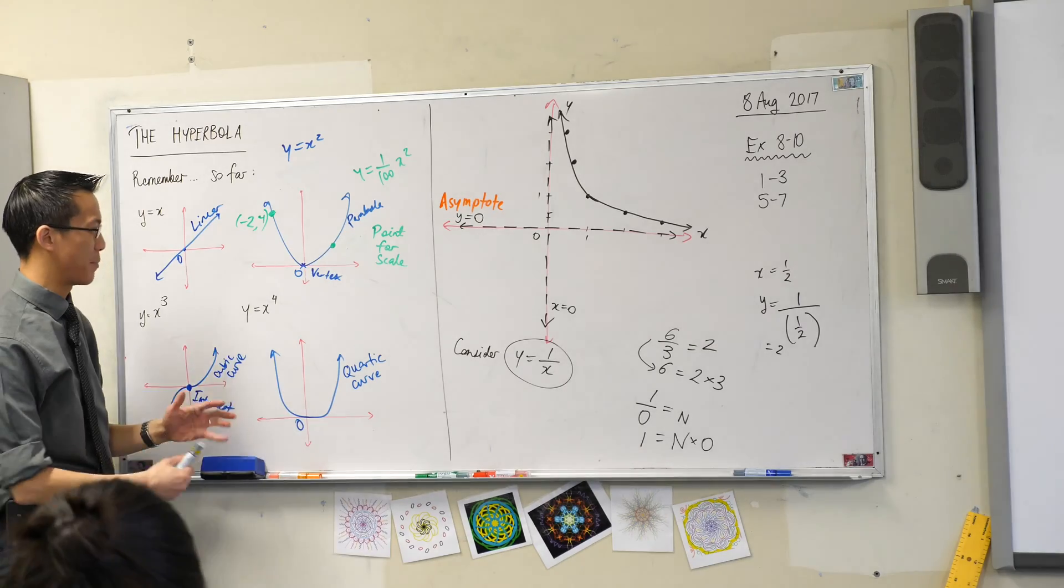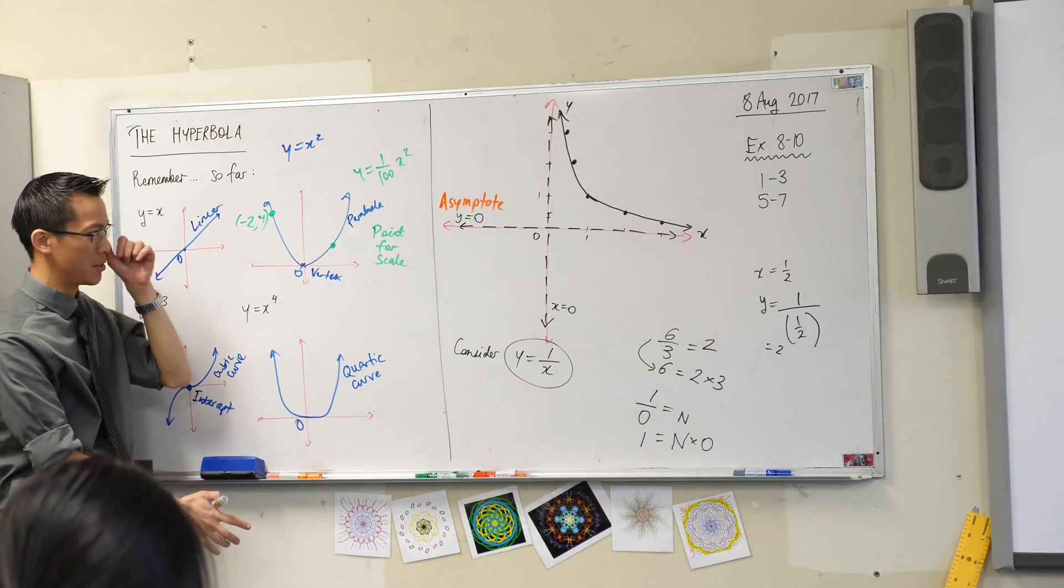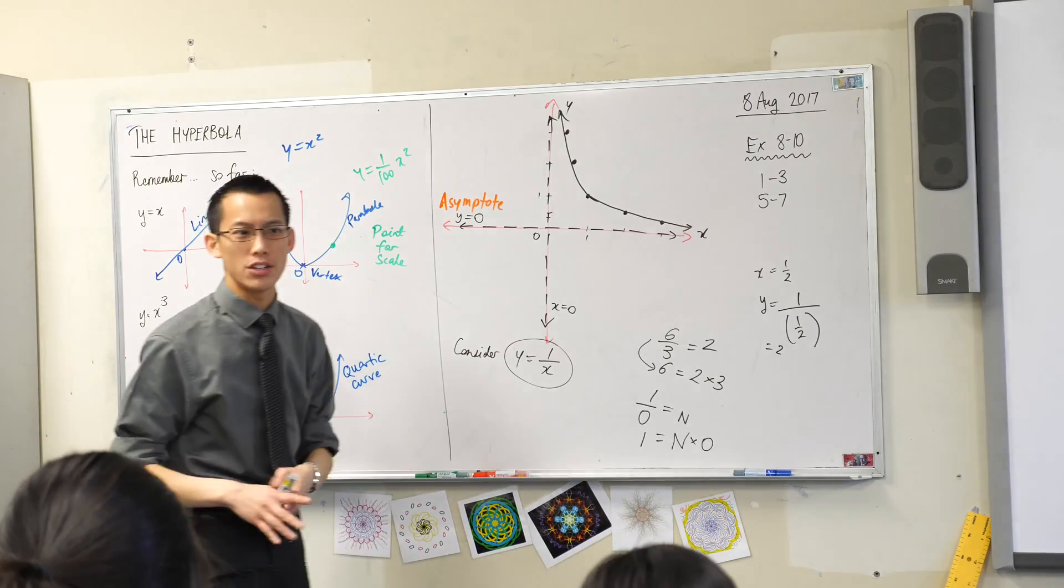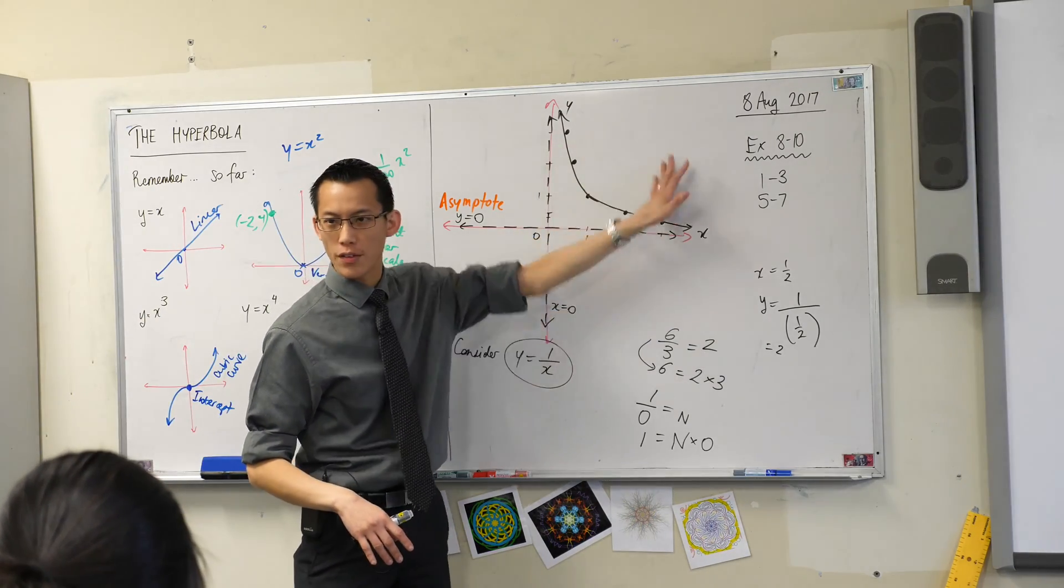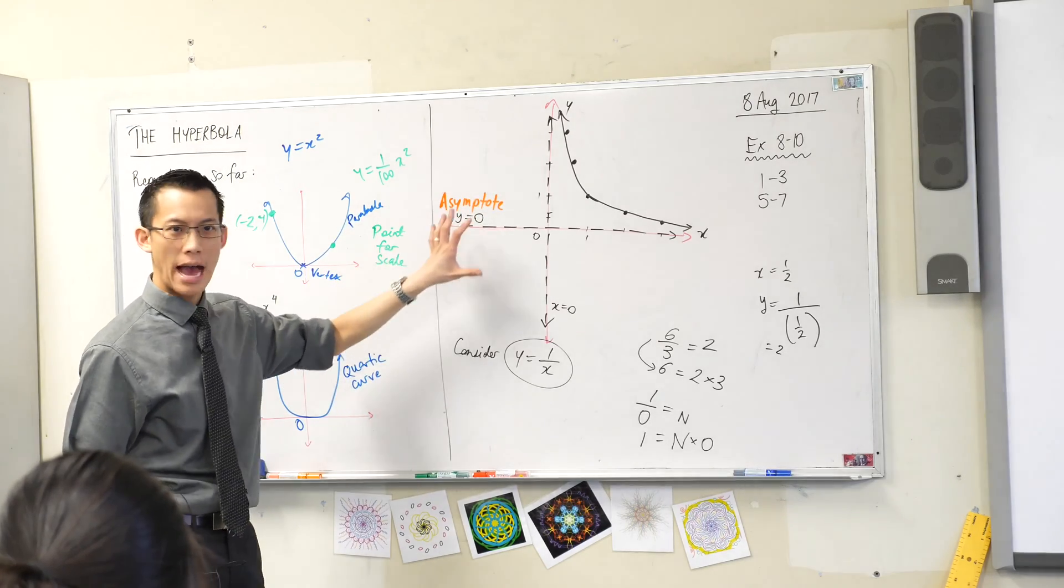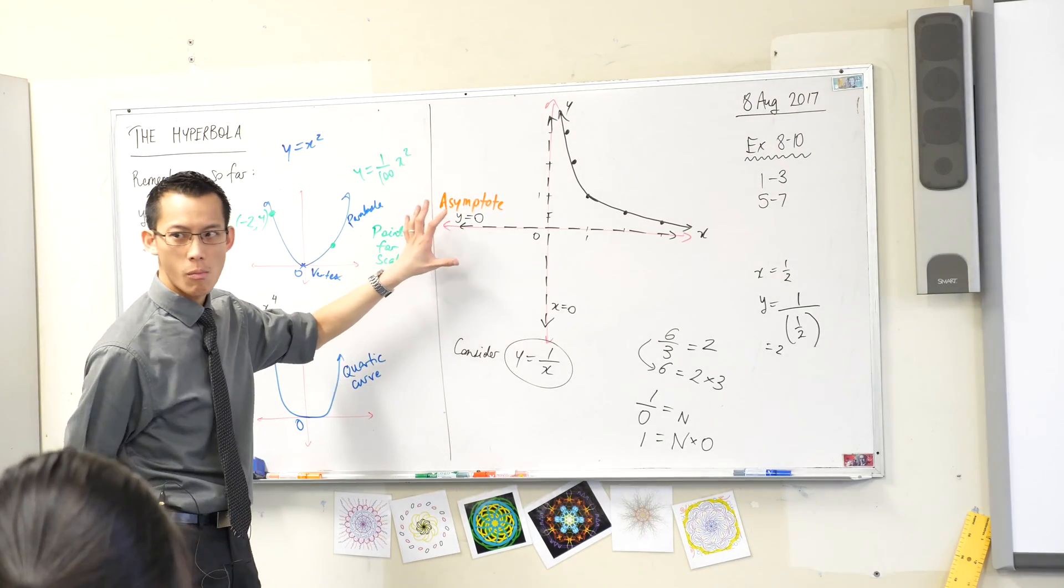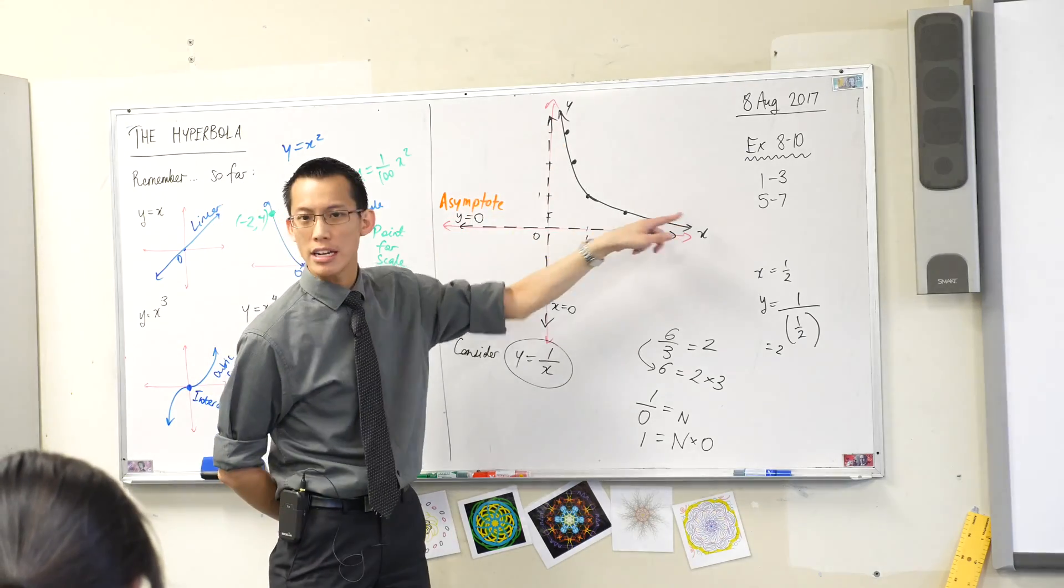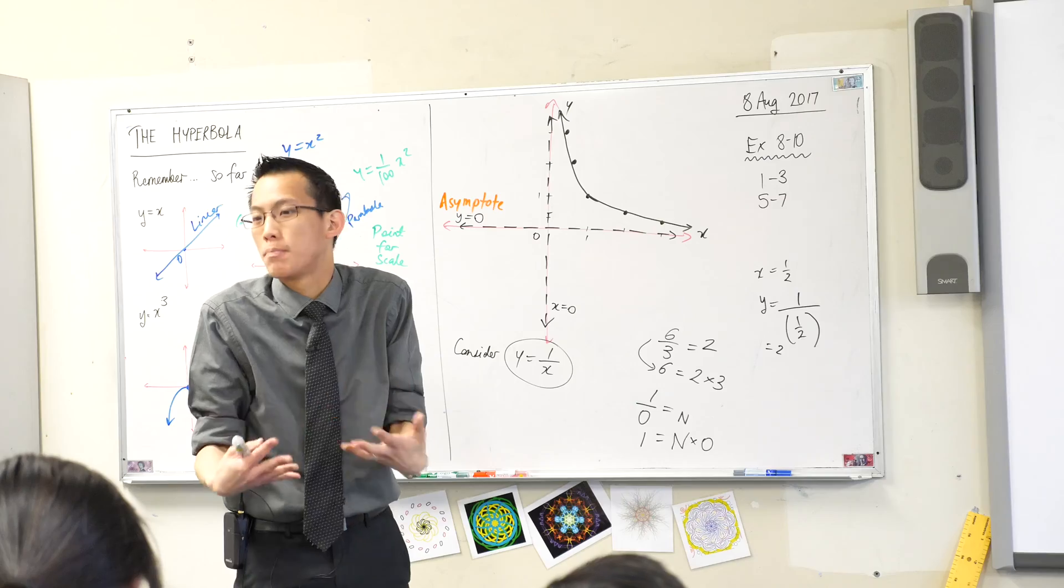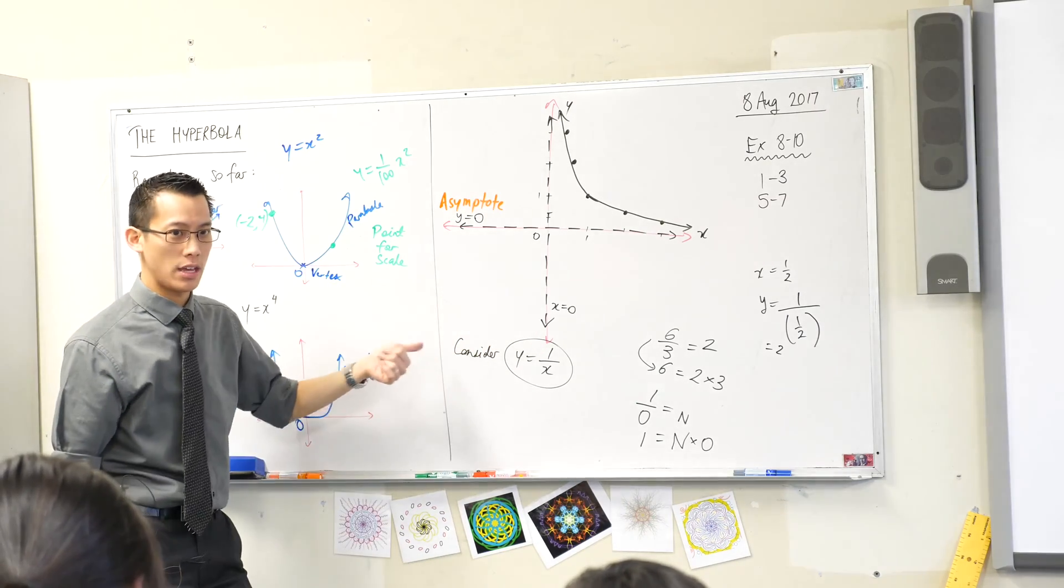So this is a weird kind of shape. It's quite different to all these other ones, even though it has similarities. Now I'm not quite finished. I know exactly what's happening over here on the right-hand side. Is there anything happening over here on the left-hand side? How would I find out? What did I do to get these things? I just tried putting numbers in - I plotted points. You can do the same thing over here.